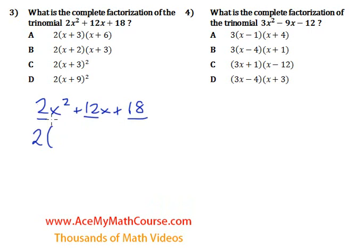How do we do that? Well, 2x squared divided by 2 is just x squared. 12x divided by 2 is just 6x. And 18 divided by 2, that's just 9.